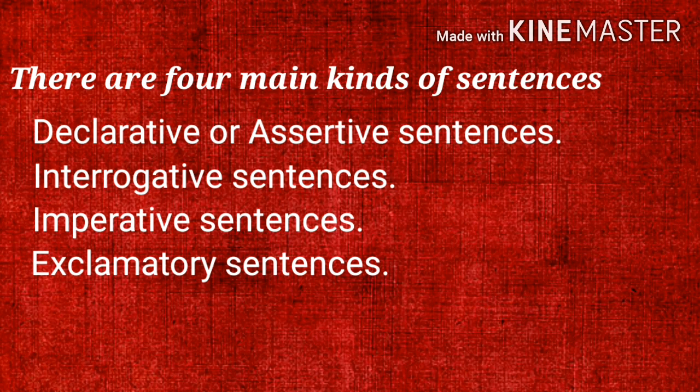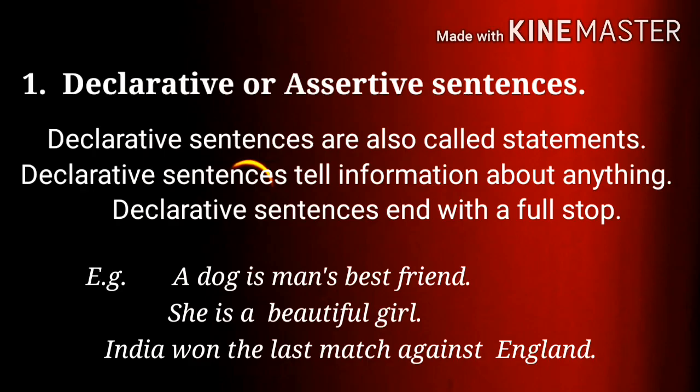There are four main kinds of sentences: declarative or assertive sentences, interrogative sentences, imperative sentences, and exclamatory sentences. The first one — declarative or assertive sentences — are also called statements. Declarative sentences tell information about anything and end with a full stop.